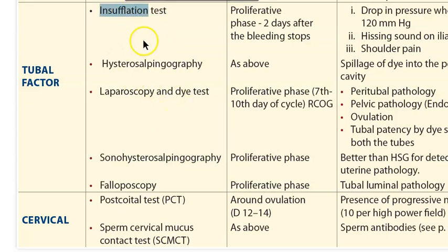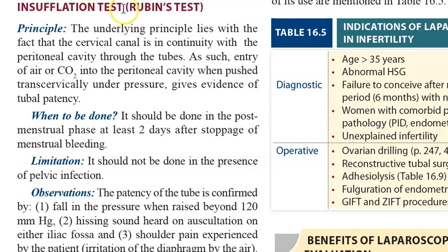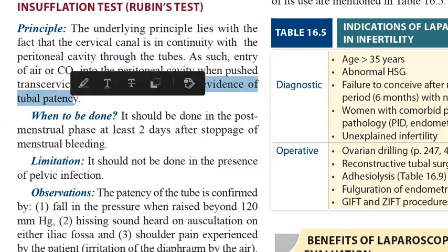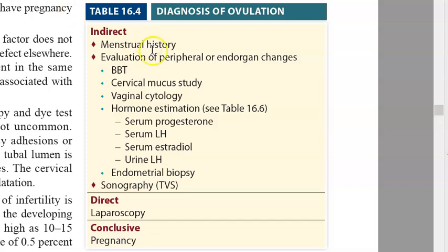The progesterone effect on cervical mucus hinders sperm penetration. The insufflation test involves putting carbon dioxide through the tubes and checking if the air passes through to the peritoneal cavity. This test is also called Rubin's test and confirms whether the tubes are patent.